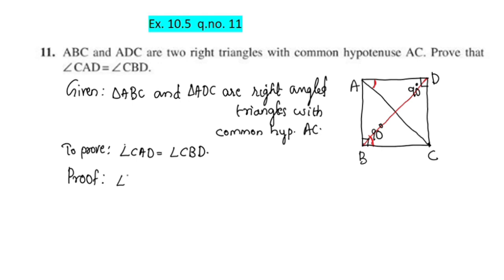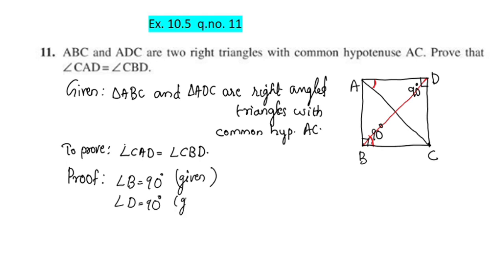We are given that angle B is equal to 90 degrees, and angle D is equal to 90 degrees. So we have been given these two conditions.